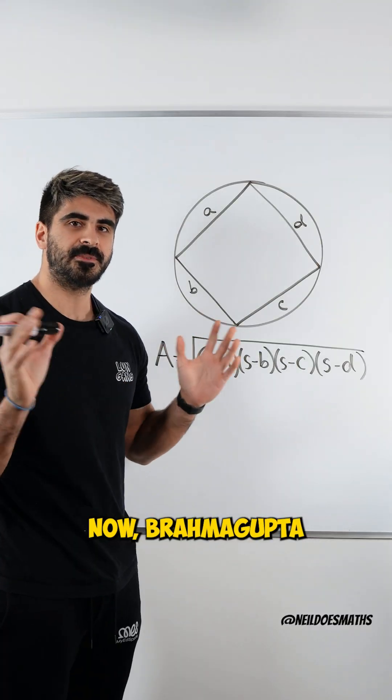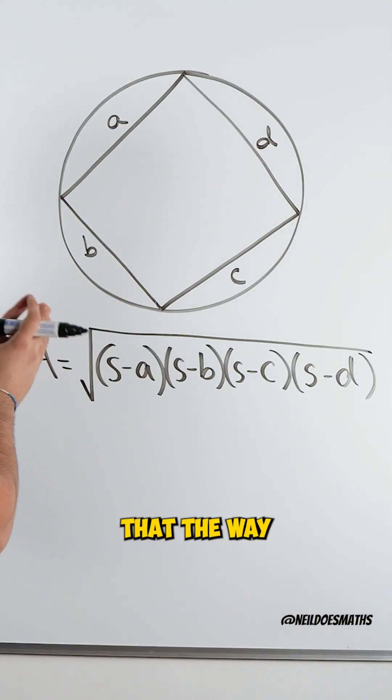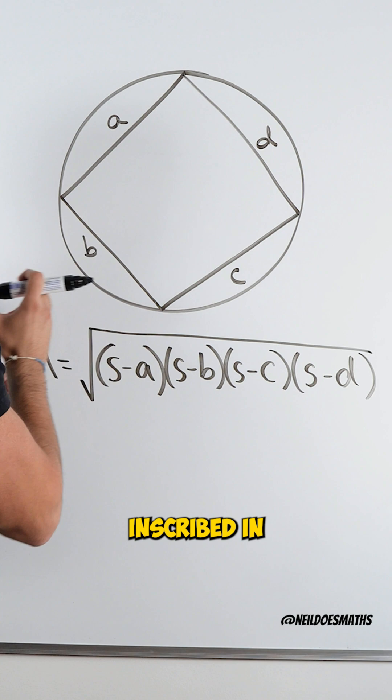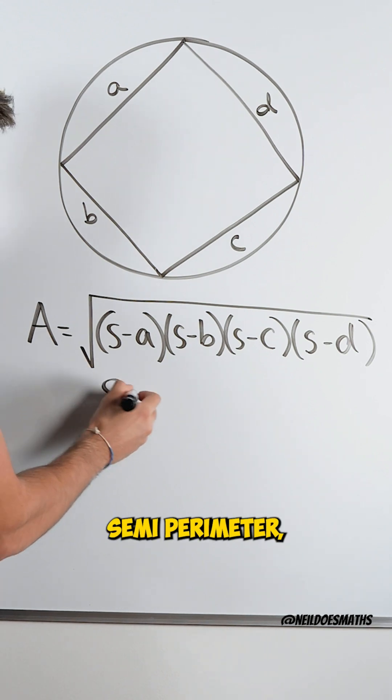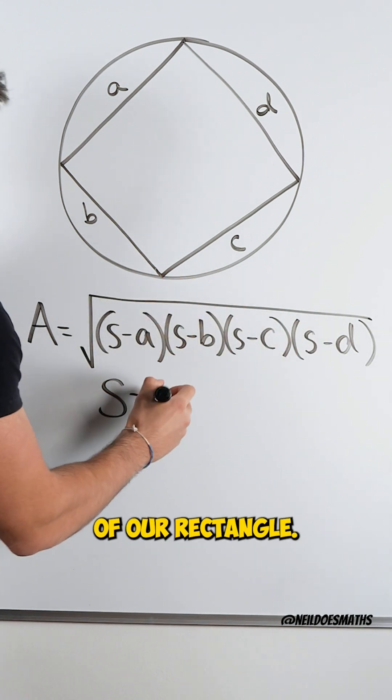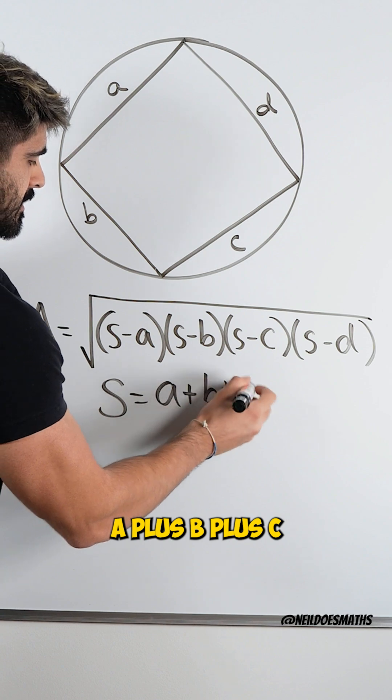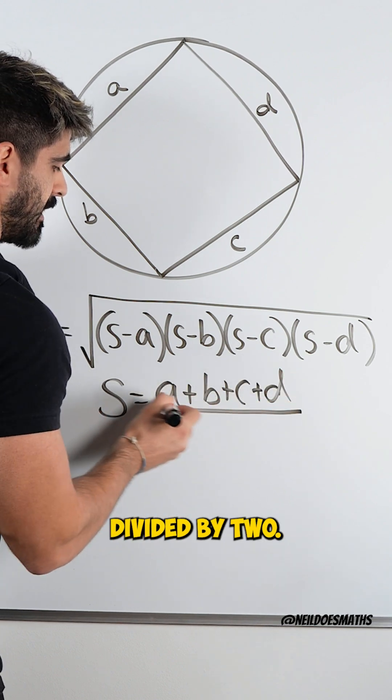Now Brahmagupta discovered that the way to find the area of this rectangle inscribed in the circle is simply this. Where S is known as the semi-perimeter where we add up all of the lengths of our rectangle A plus B plus C plus D divided by 2.